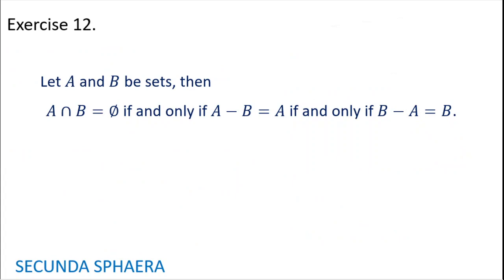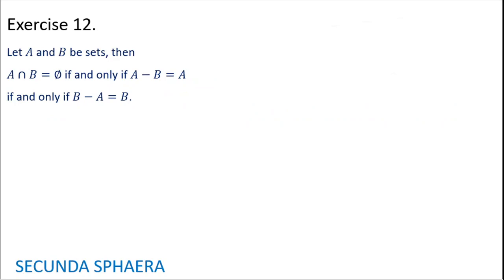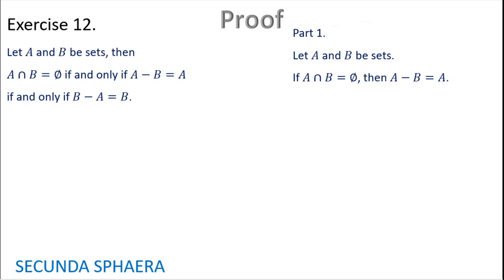Moving on to exercise 12: let A and B be sets. Then A intersection B equals the empty set, if and only if A without B equals A, and if and only if B without A equals B. This is a three-part equivalence. I recommend starting with two implications: if A intersection B equals the empty set then A without B equals A, and if A without B equals A then A intersection B equals the empty set. Proving these two gives the first equivalence.